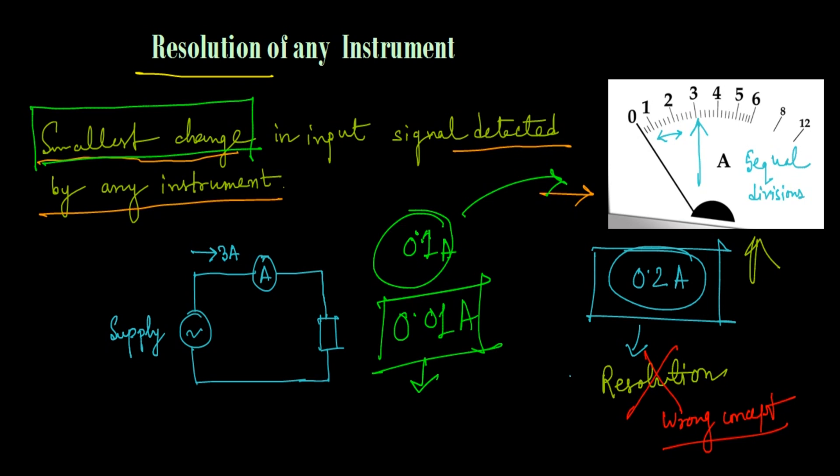So the number of divisions and the value of each division is never the amount of resolution or indicator of resolution of any instrument. Now, is that clear?